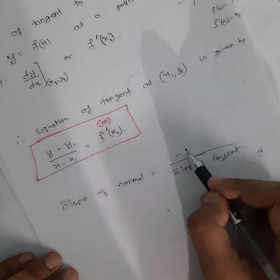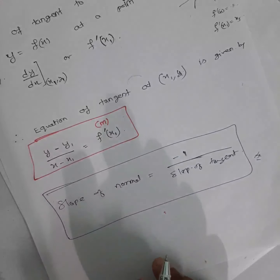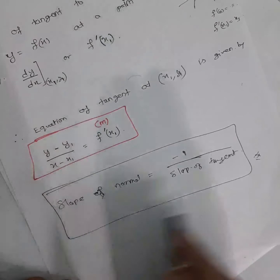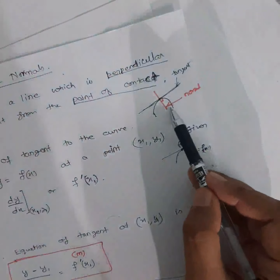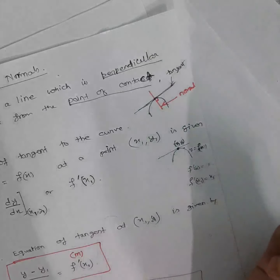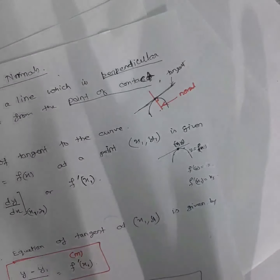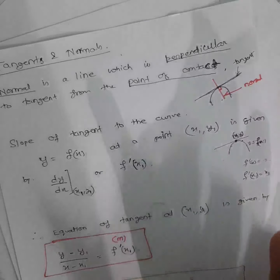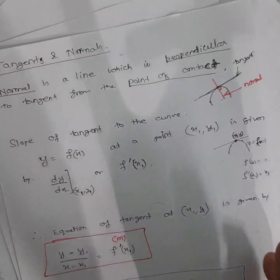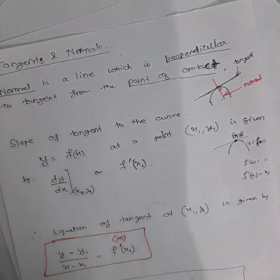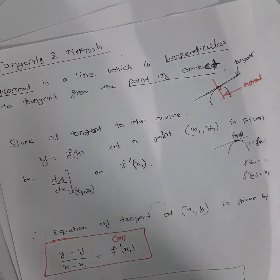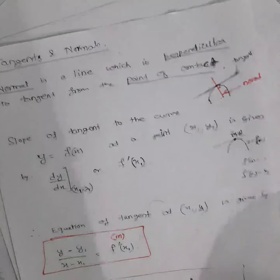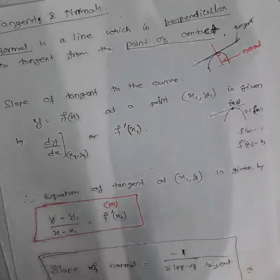With this knowledge, nothing new needs to be understood here. Normal is simply perpendicular to the tangent — that's all. If you have a proper understanding of straight lines from Class 11, this topic follows naturally. You may have forgotten the formulas, but while doing problems you can recall them. We will start the exercise in the next video.